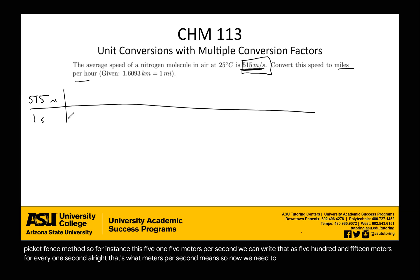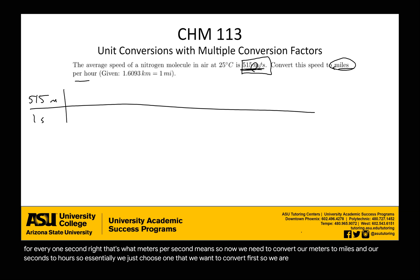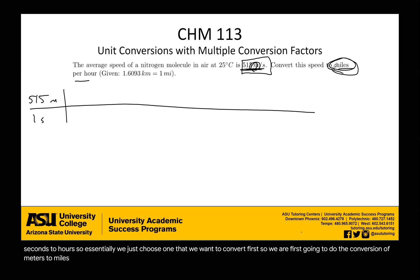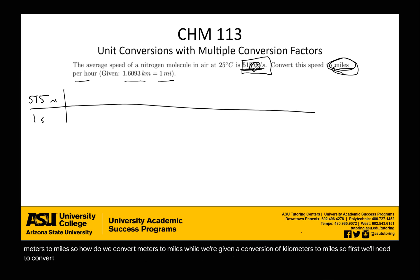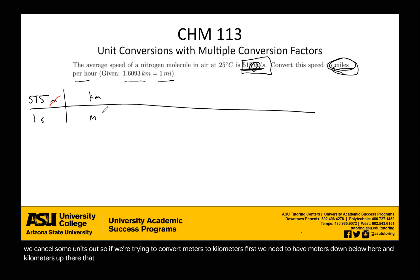Now we need to convert our meters to miles and our seconds to hours. We'll convert meters to miles first. We're given a conversion of kilometers to miles, so first we'll need to convert meters to kilometers and then convert those kilometers to miles. When we do this we want to make sure we cancel units out — so we need meters down below and kilometers up top, so that our meters cancel out.